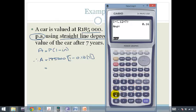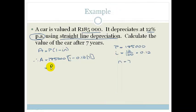And then we times our 185,000, and we get 29,600. So this car is only valued at 29,600 Rand after 7 years.